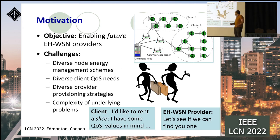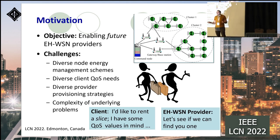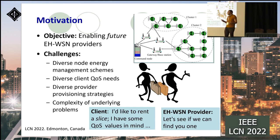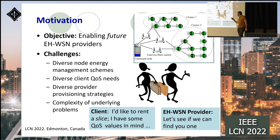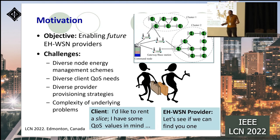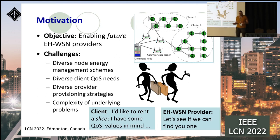Examples of challenges include the diversity of node energy management schemes — for example, a scheme that adapts the transmission range based on the node energy level, or adapts the amount of flow a node can send in a certain time interval, or adapts scheduling techniques to keep nodes active or in low-power sleep mode. Another challenge is the diversity of client quality of service metrics, such as coverage and reliability metrics, and a third challenge is the diversity of provider provisioning strategies with the complexity of the underlying problems.